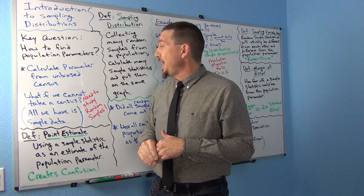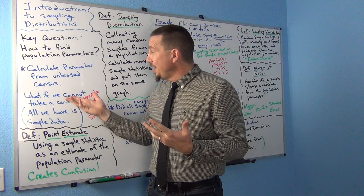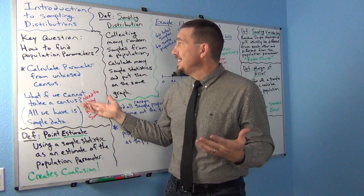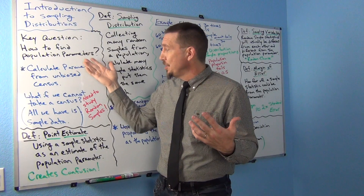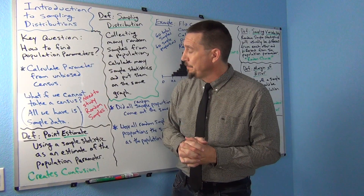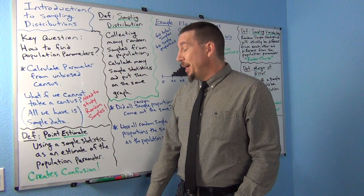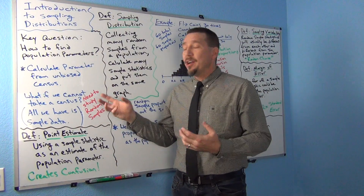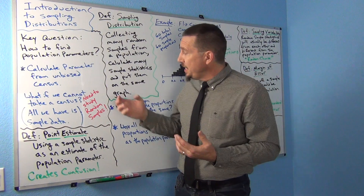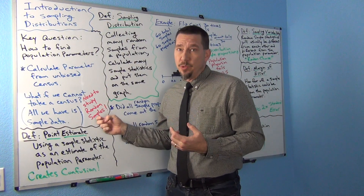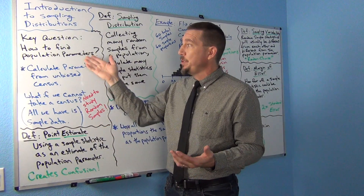In which case we have to rely on a sample. If we cannot take a census — how do we find population parameters when we can't do one? All we have maybe is some sample data. We have to dig deeper into this. We need to know how random samples work and what random samples can and cannot tell us about populations.